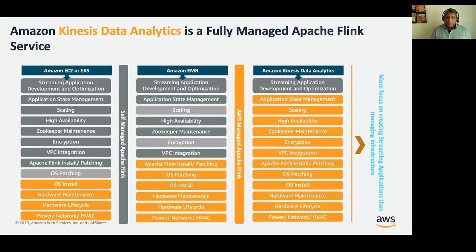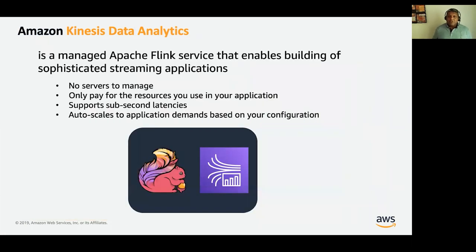In this workshop, we are going to be focused on Amazon KDA. Amazon KDA is a fully managed Apache Flink service that enables building sophisticated streaming applications. There are no servers to manage, and you only pay for the resources that you use in your application. Amazon KDA supports sub-second latencies, and it auto-scales to your application demands based on your configuration. With that context of Amazon KDA, let's now jump into the workshop.